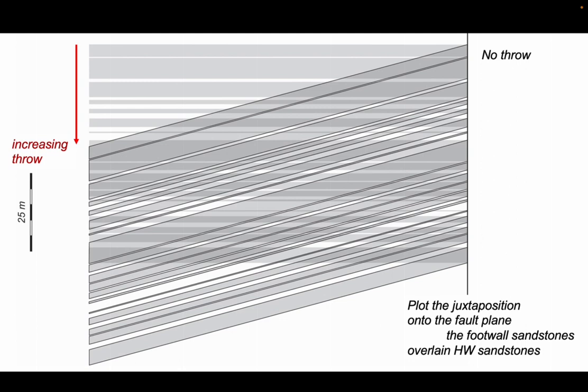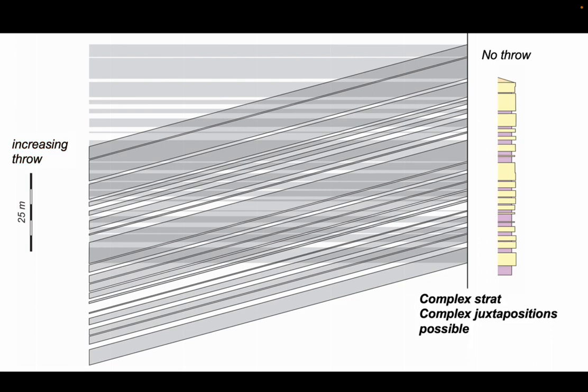So lots of new juxtapositions, communication between different sandstone beds as a consequence of the throw on the fault. Highly detailed complex stratigraphy can generate complex juxtapositions as the fault slips.